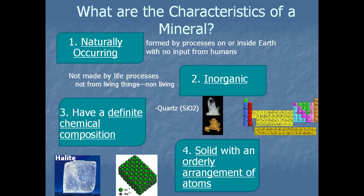The fourth characteristic of minerals is that they are solid and have an orderly arrangement of atoms. You'll see the example of halite — it's a solid mineral, and the picture beside it with the green and gray dots shows what the arrangement of the atoms looks like to make that mineral.